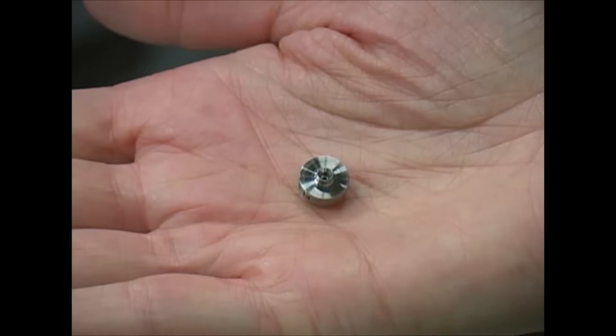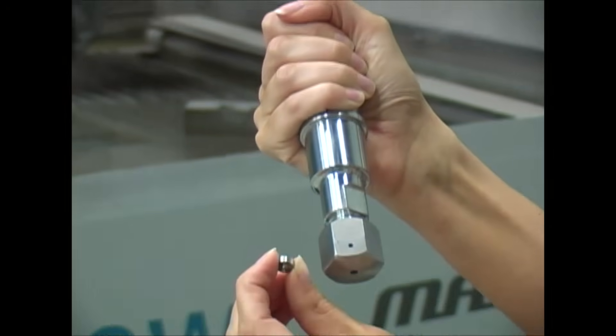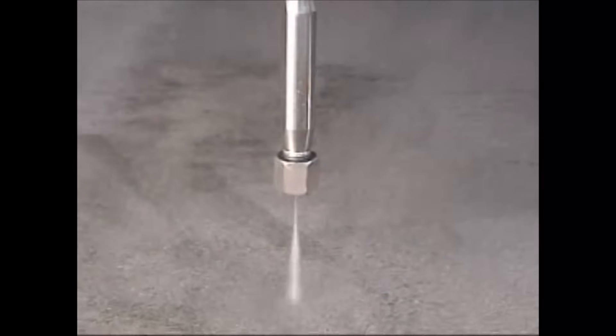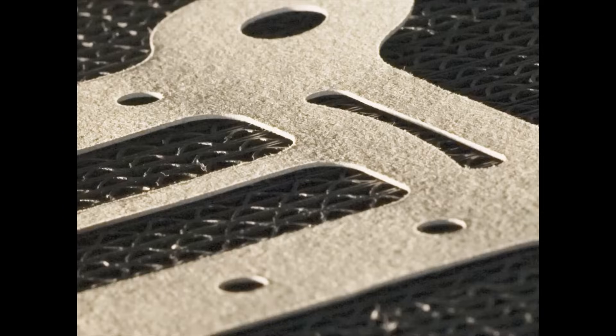A small diameter hole in a jewel orifice converts pressure into velocity. The resulting supersonic Water Jet Stream can cut soft materials such as food, foam, plastic, gaskets, and more.